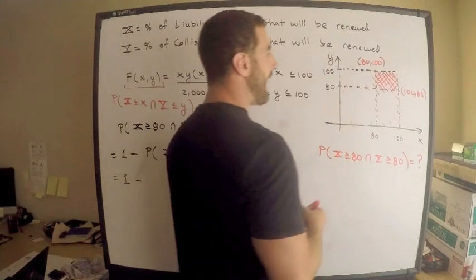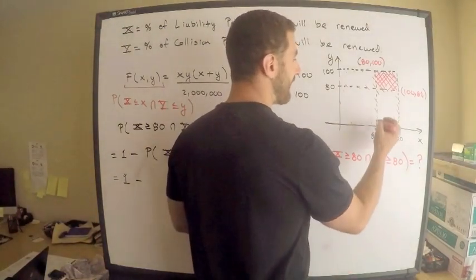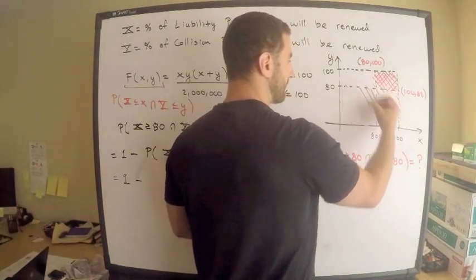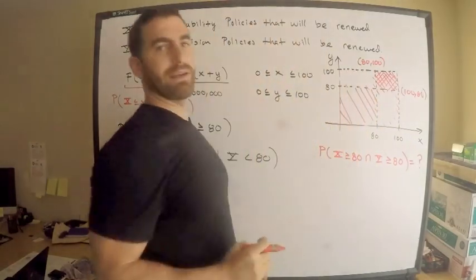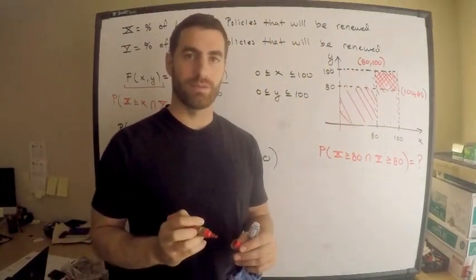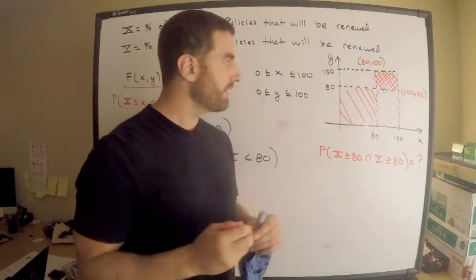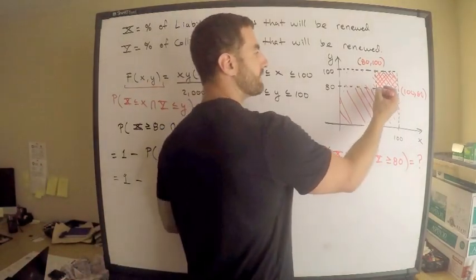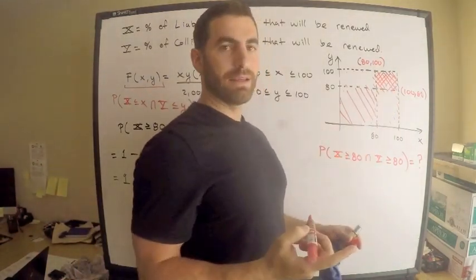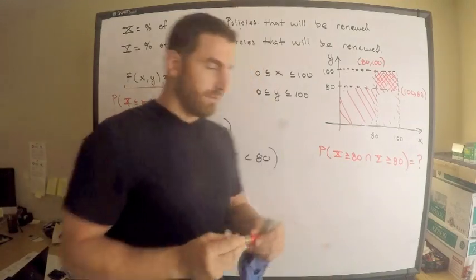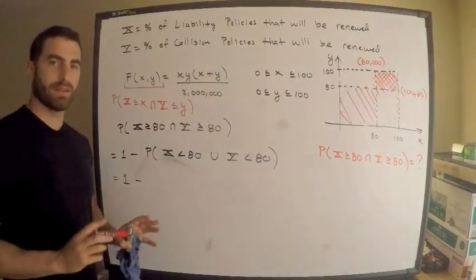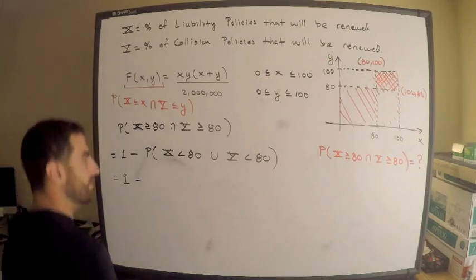So what do I need to do? I need to subtract, actually, the intersection. I need to take this away because I counted it twice. I counted it twice, right? So this intersection, of course, is 80 comma 80. So hopefully, I'm hoping you're really making sense of this.